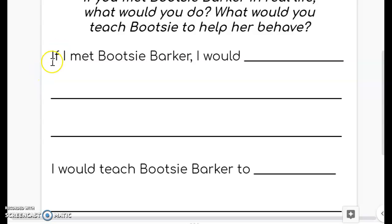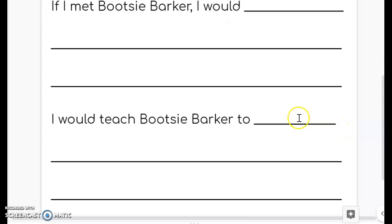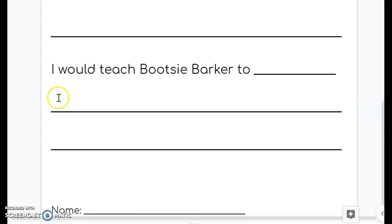Your first sentence says, If I met Bootsy Barker, I would... And you're going to finish that sentence by telling me what you would do if you met Bootsy Barker. When your thought is finished, please put a period at the end because that's the end of your first sentence.